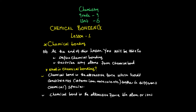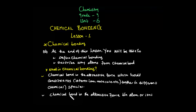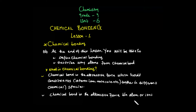Let's see the definition of chemical bonding. What is chemical bonding? How do you define it? Chemical bond is the attractive force which holds or binds atoms, ions, molecules, etc., together in different chemical species. Or: chemical bonding is the attractive force that binds atoms together in a molecule or crystal lattice. That is the definition of chemical bonding.